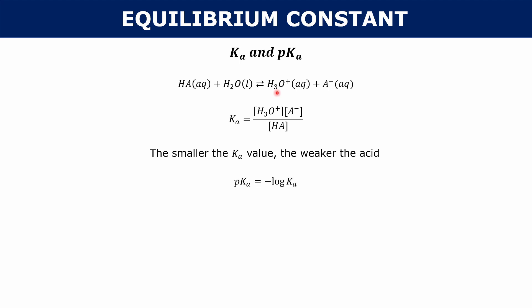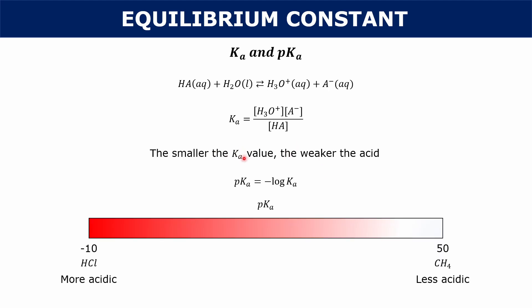pKa is a derivative of Ka — it's just the negative log of your Ka value. That simplifies the numbers but also flips the scale. So before, a small Ka meant a weak acid, but now a small pKa means a strong acid. Something like hydrochloric acid, which is really acidic, has a pKa of negative 10. On the other hand, if you have a really high pKa value, you have a weak acid — something like CH₄ (methane) is really not acidic, so it has a pKa of 50.